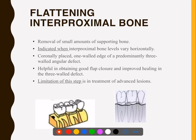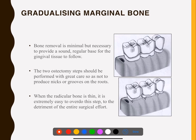Flattening of interproximal bones means the interdental bones are properly flattened. Review the provided material and make a note of all this. Gradualizing the marginal bone is done at the end to ensure the bone is properly contoured and accessible for maintenance.